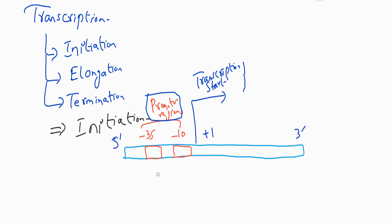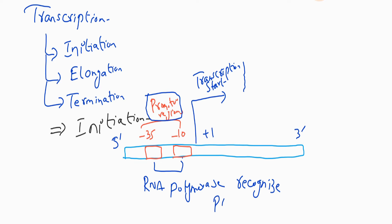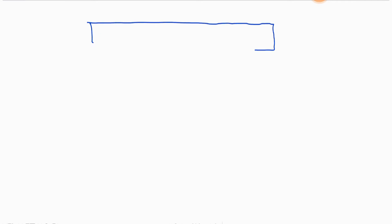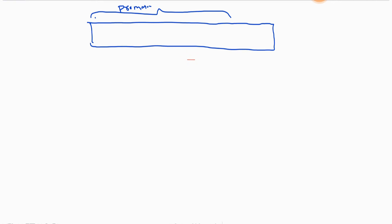During initiation, RNA polymerase recognizes the promoter region and unwinds the DNA. The promoter site for RNA polymerase 2 is a highly conserved sequence located about 25 to 35 base pairs upstream of the transcription start site, and is known as the TATA sequence or TATA box.